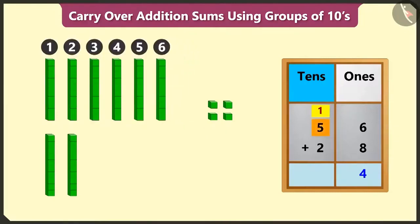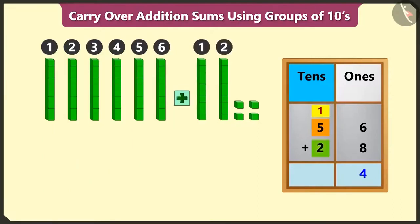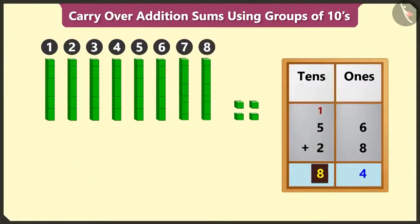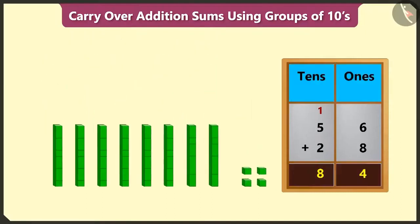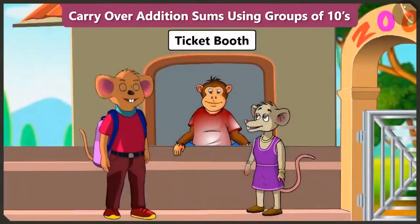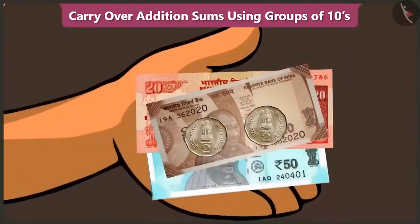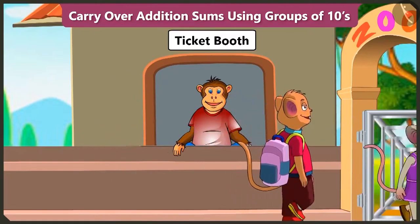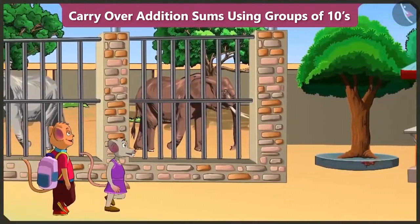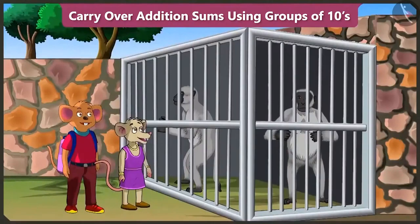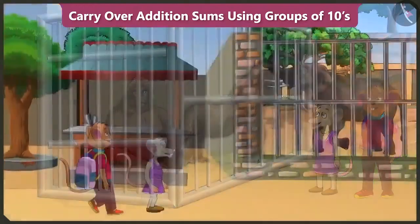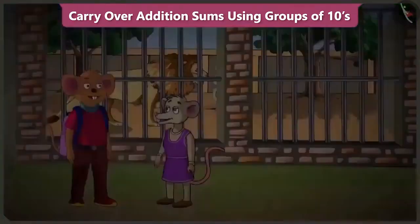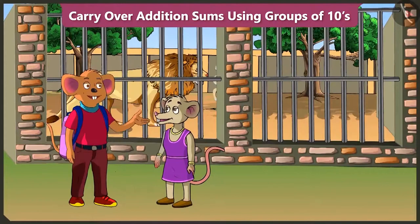Adding 1 and 5 will make 6, and 6 added to 2 will make 8. Now, 8 tens and 4 ones, which means we have to give 84 rupees. Let's go inside. This place looks like a lot of fun. Yes, this is truly an enjoyable place.